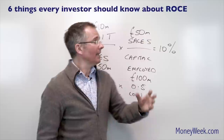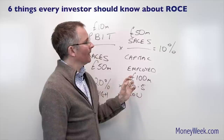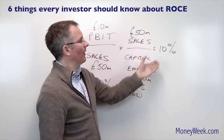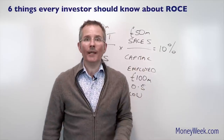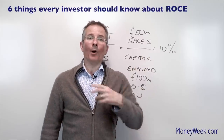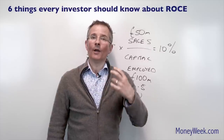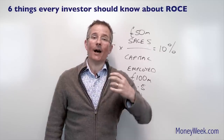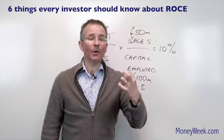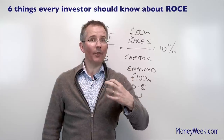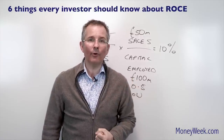Thirdly, it doesn't give you any real sense for risk. You might think 20% is better than 10% — and clearly it is — but what sort of risks are involved in getting your 20%? So again, it almost asks as many questions as it answers. But used in combination with other ratios, it can be a pretty useful tool.